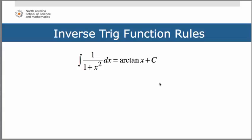Let's consider now the inverse trig functions — there are only three you are required to know. If we have the antiderivative of a function that looks like 1 over 1 plus x squared dx, that antiderivative is arctangent of x plus c. If you think of your arctangent derivative rule, it was 1 over 1 plus x squared. When doing antiderivatives like this, it's really a matter of recognizing the pattern of the integrand.